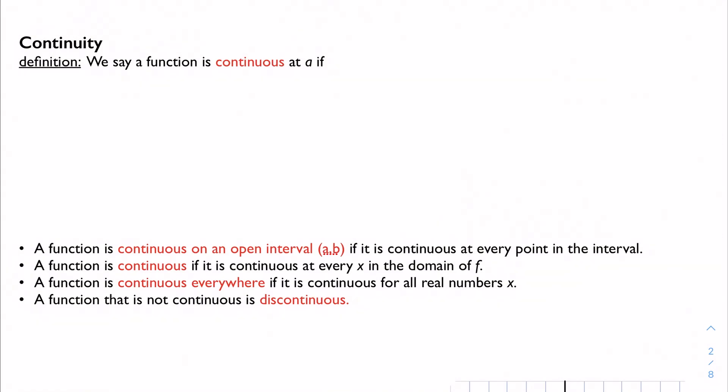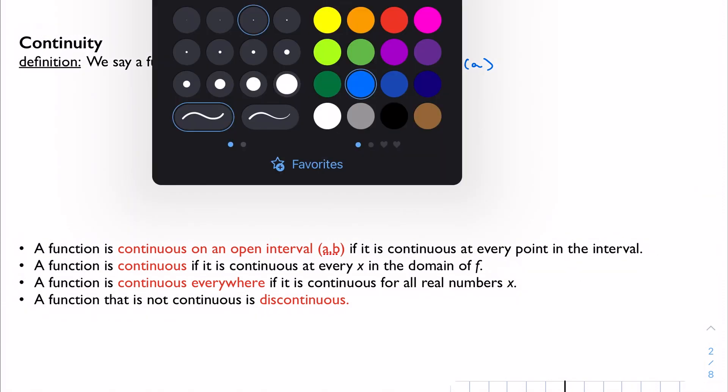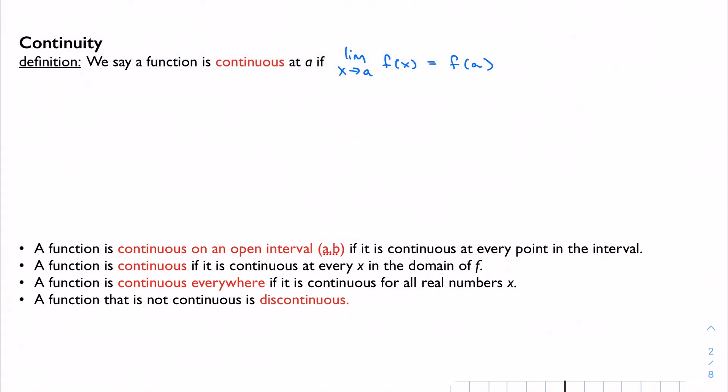Our next part is to talk about continuity. We say a function is continuous at a if the limit at that value and the actual function value are equal. We just got done talking about how these are not necessarily always equal. The limit doesn't care if it's equal to the function value or not, but sometimes they are. And if they are, we say that the function is continuous. Generally speaking, continuity is a fancy way of saying that I can draw the graph without picking up my pencil.